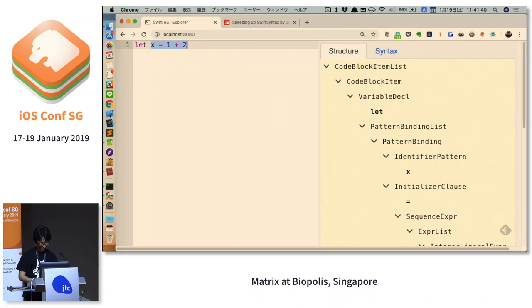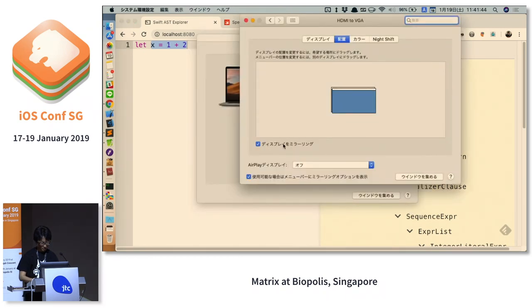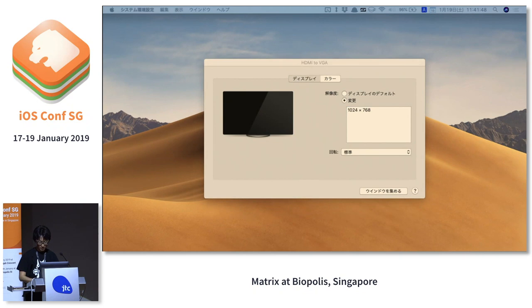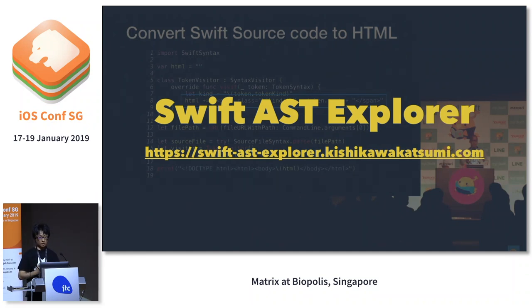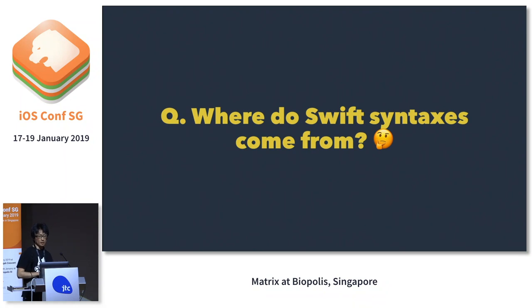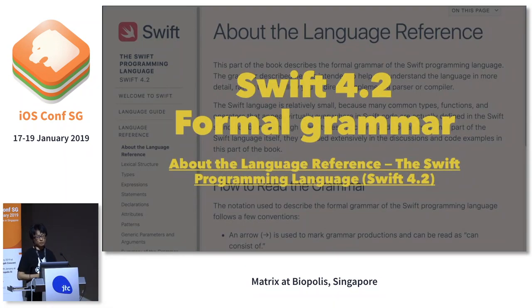So we've just seen how Swift code is translated into AST. This visualization tool is a great first step to know more about how AST is structured in Swift, so that we can start making our own code formatter — and that's our goal for today's presentation.